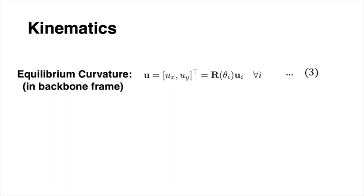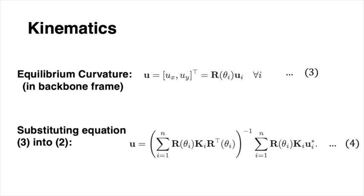The equilibrium curvature components in the robot backbone frame can be expressed as equation 3. By substituting equation 3 into equation 2, the result can be manipulated to obtain the equilibrium curvature vector.